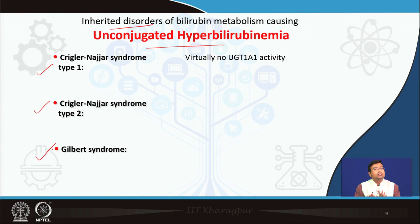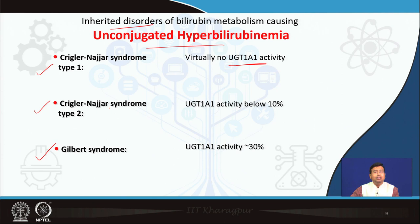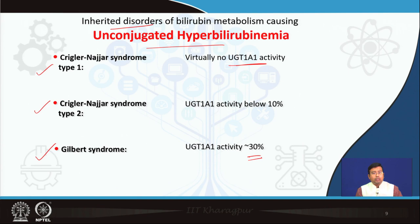In Crigler-Najjar syndrome type 1, there is virtually no conjugation because the activity of UDP glucuronosyl transferase UGT1A1 is almost completely missing. Whereas in type 2, it is not fully missing — at least 10 percent of the activity is present. So there is some degree of conjugation in type 2, making it a milder disease compared to type 1. In Gilbert syndrome, this activity is reduced to generally around 30 percent. So Gilbert syndrome is even milder compared to Crigler-Najjar type 2. The amount of enzyme activity differentiates all three syndromes.